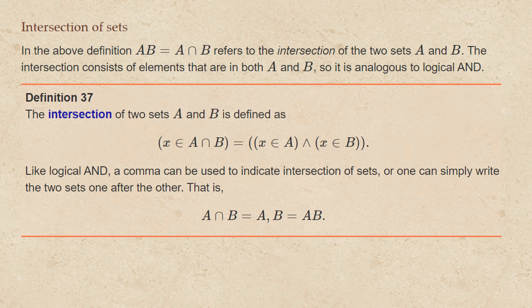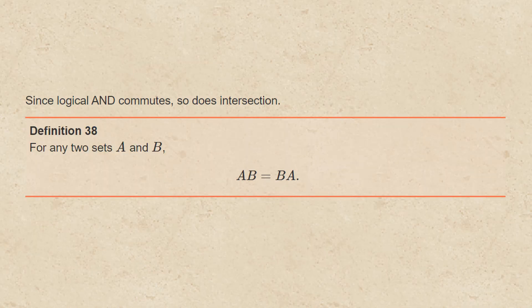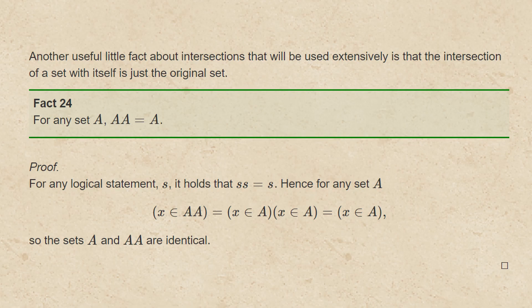The intersection consists of elements that are in both A and B, so it is analogous to logical AND. The intersection of two sets A and B is defined as: x is an element of A intersect B means that x is an element of A and x is an element of B. Like logical AND, a comma can be used to indicate intersection of sets, or one can simply write the two sets one after the other. Since logical AND commutes, so does intersection: A intersect B equals B intersect A. Also, the intersection of a set with itself is just the original set — for any set A, A intersect A equals A — because the logical statement S AND S equals S.